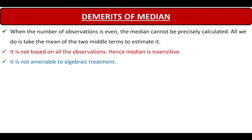Next, it is not amenable to algebraic treatment. In the lecture for mean, we had seen that mean can be used for finding out standard deviation, variance, and weighted mean. But median cannot be used for any such further treatment. That's why it is said that median is not amenable to algebraic treatment — nowhere will you find median being used for standard deviation or weighted calculations. Only mean is used for all those purposes.